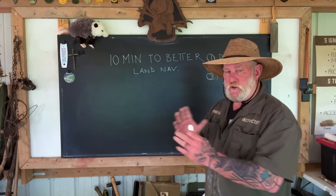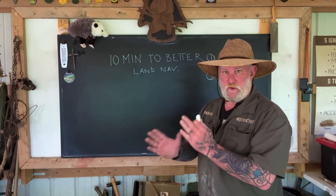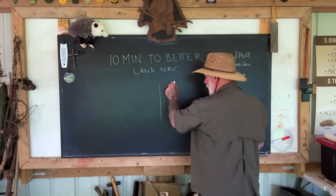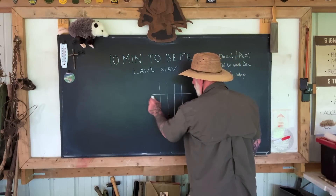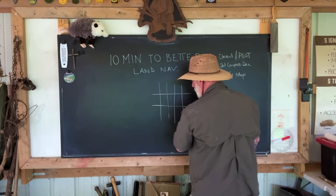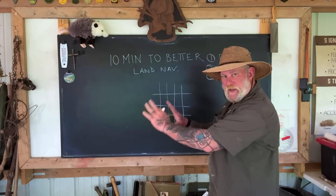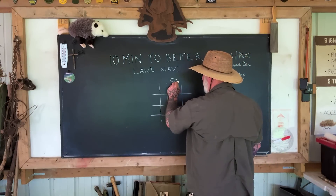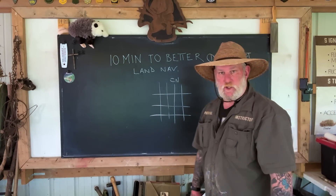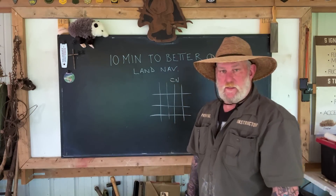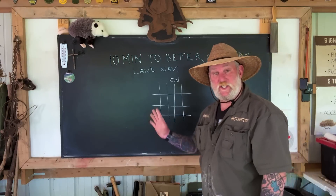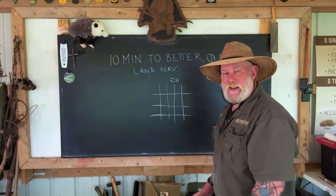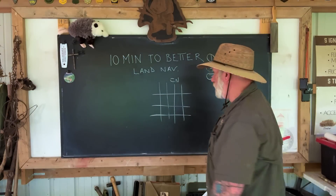Understanding there are two different types of north that you have to deal with: grid north, which are the north-south lines on any map as laid down on the face of the earth. Magnetic north, the majority of the time, unless you're on the zero line, will be easterly or westerly of that, and that's where your compass needle points to.